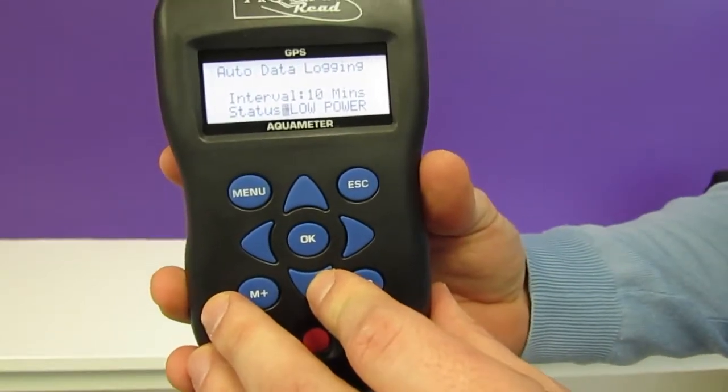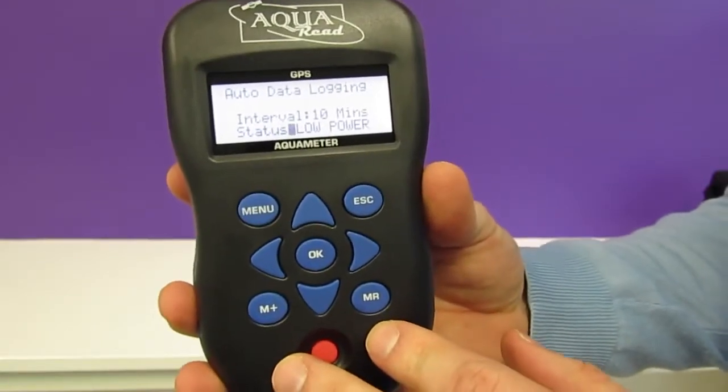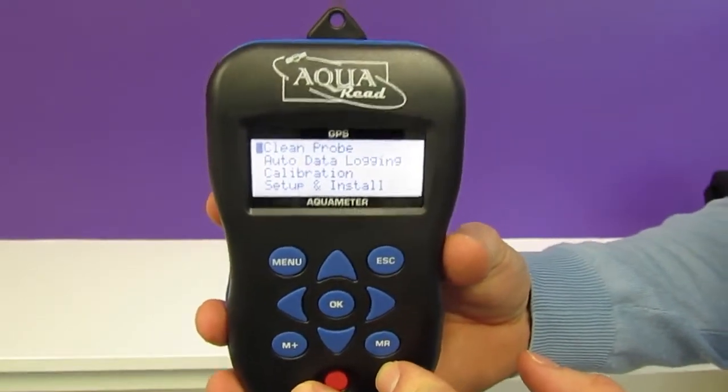In this low power mode the entire system will go to sleep in between readings maximizing the battery life. In this setup you can log for up to 38 days continuously.